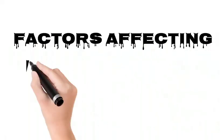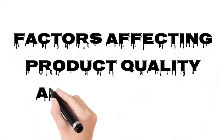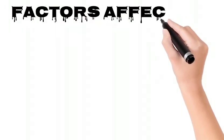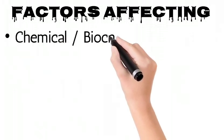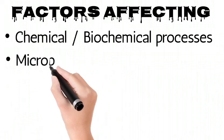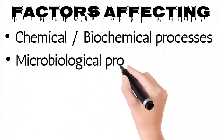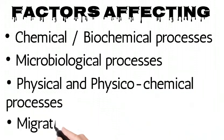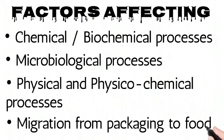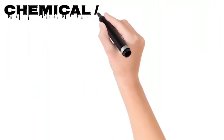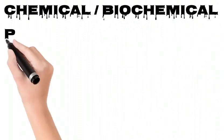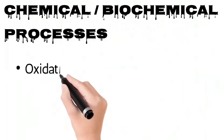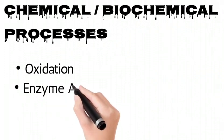Factors affecting product quality and shelf life: number one, chemical and biochemical processes — including oxidation and enzyme activity; number two, microbiological processes; number three, physical and physicochemical processes; and number four, migration from packaging to food.